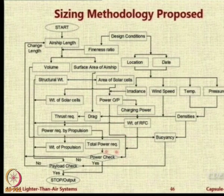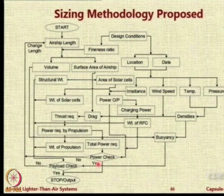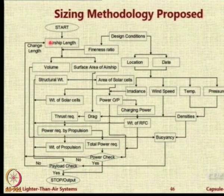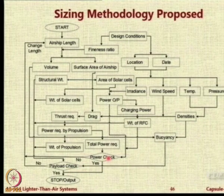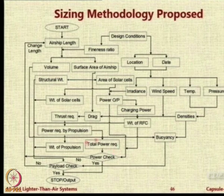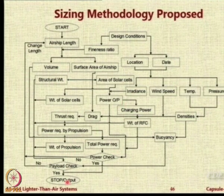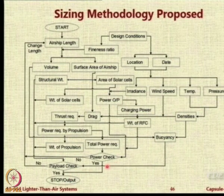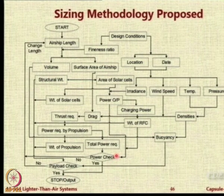We finally check whether the power requirement is met or not. If it is not, we go back and change the length, do the iteration. Both payload and power checks should be fulfilled; otherwise, change the length. If all power and payload requirements are met, end the calculation. That is for initial sizing — it is not optimum sizing.